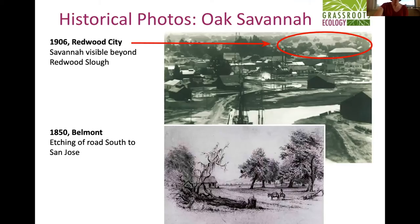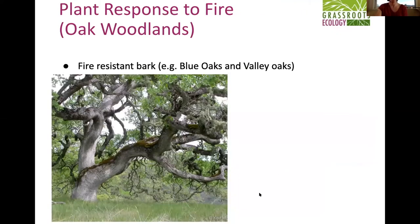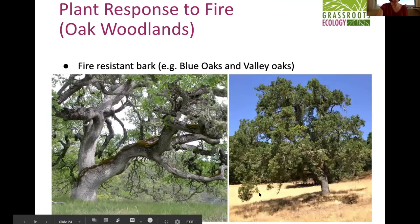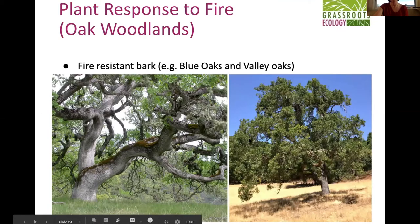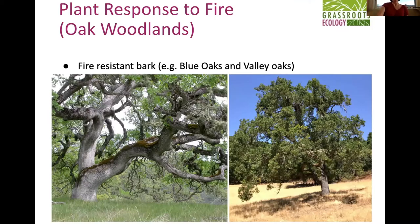Here are historical photos of this area — a picture of Redwood City over 100 years ago showing an oak savanna in the background, which is now all built up. Another image shows the prevalence of oaks and oak savanna habitat — an etching of a road going south to San Jose from Belmont. One cool adaptation is in blue oak and valley oak — their bark is really thick and fire resistant, and they tend to grow in hot, dry conditions in valleys with all the grass.